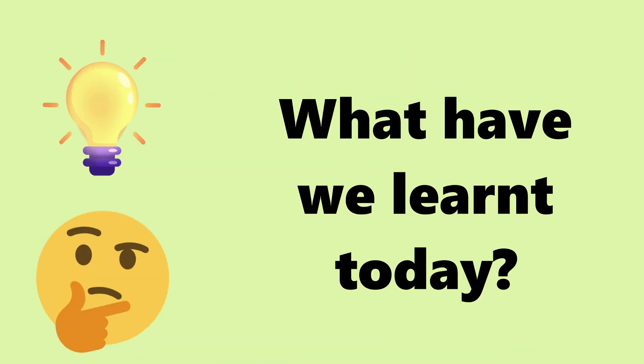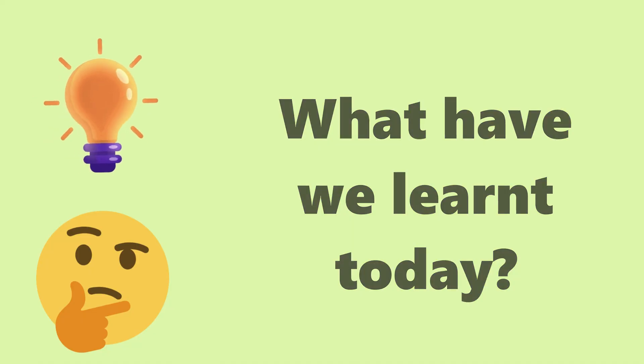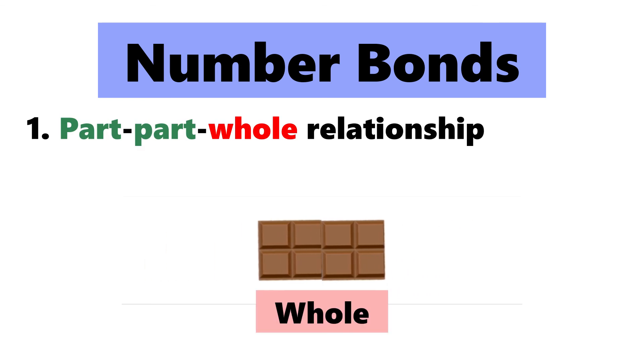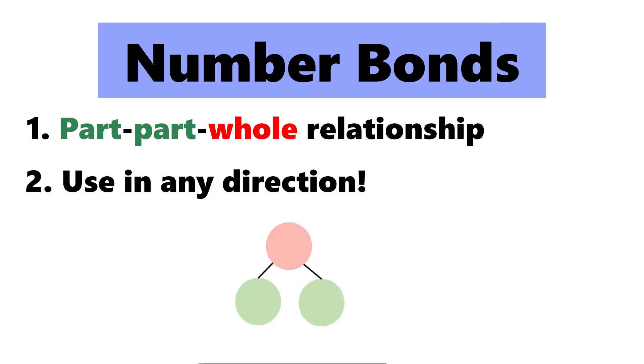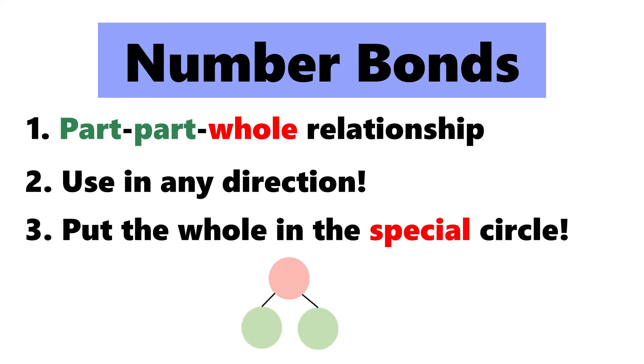What have we learnt today? We learnt about number bonds. Number bonds help us to see the part-part-whole relationship. They can be used in any direction. We put the whole in the circle with two lines coming out from it.